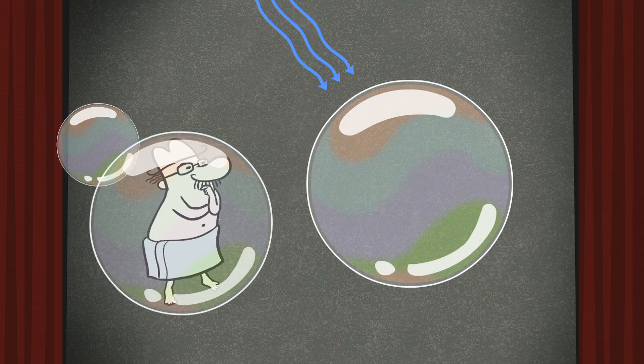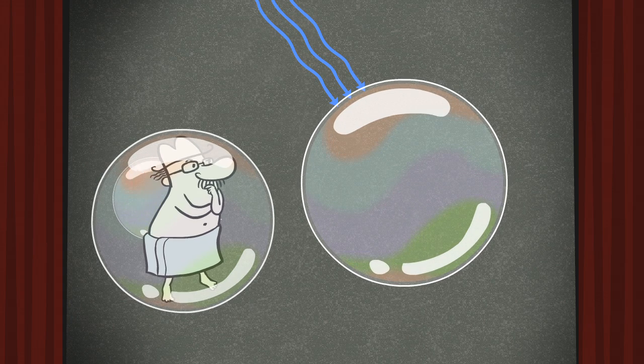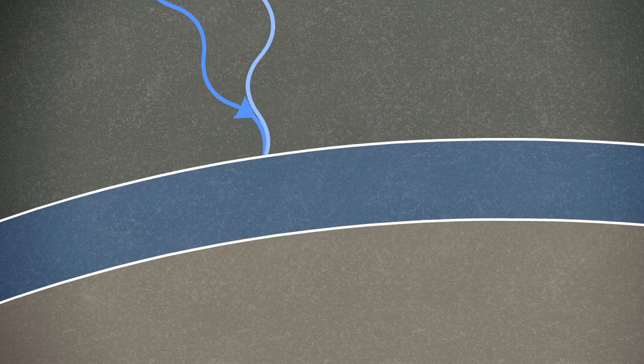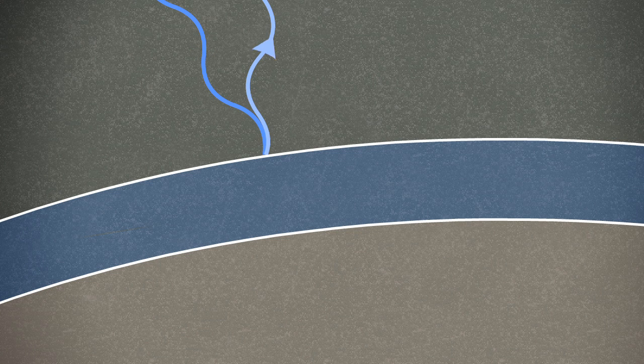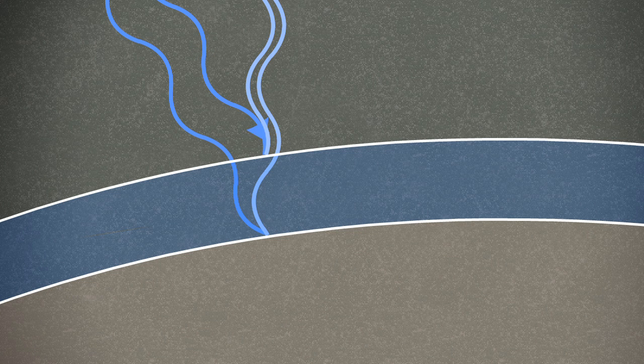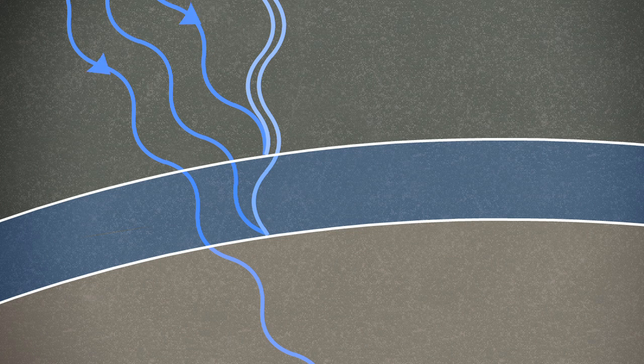Here is a blue light wave hitting the surface of a bubble. As you can see, some of the wave is reflected off the top, some is reflected off the bottom, and some passes right through.